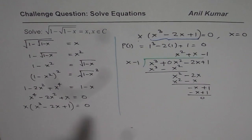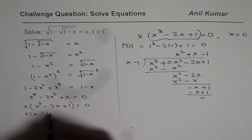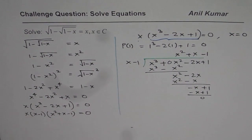So I am just writing this equation here as x times x minus 1 times x square plus x minus 1 equals 0.